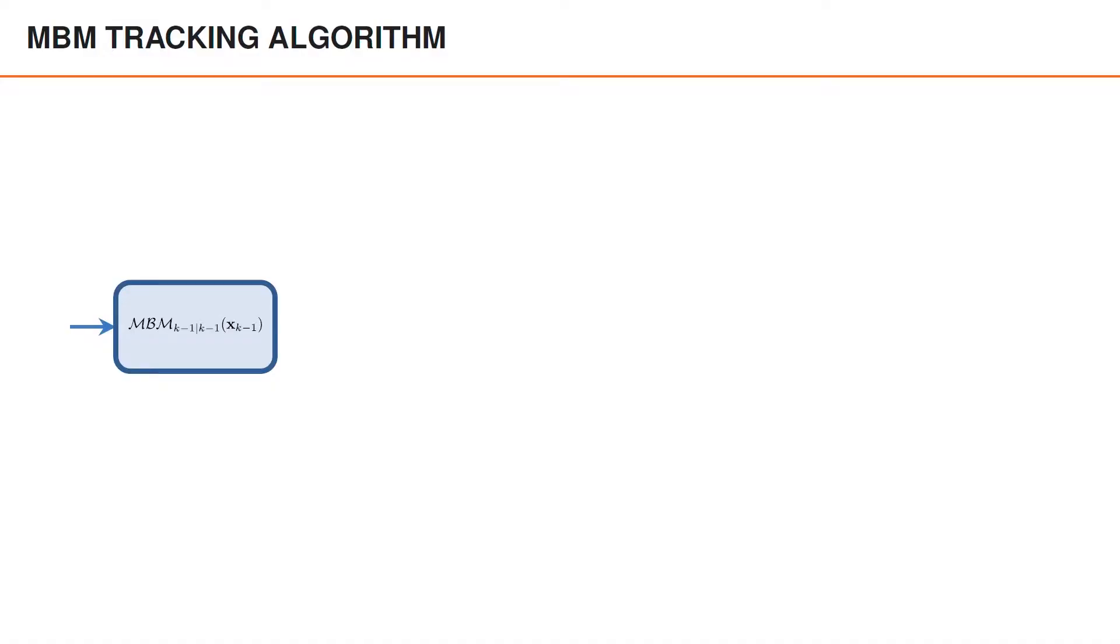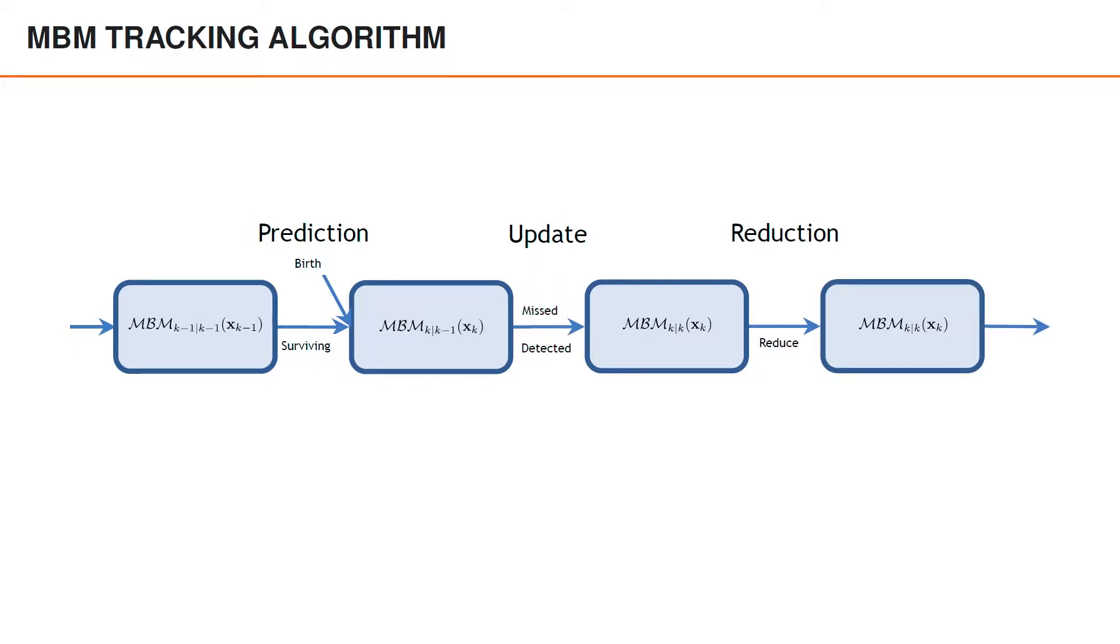In the Multi-Bernoulli mixture filter, we have an MBM density. In the prediction, we have the surviving objects and add birth Bernoullis. In the update, we have both misdetected and detected objects. And in the reduction step, we reduce the posterior MBM density so that we have a reasonable computational cost for the tracking filter.